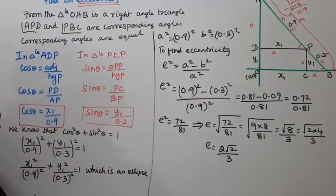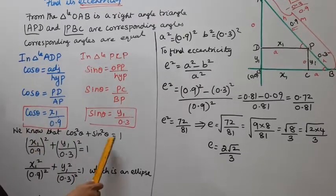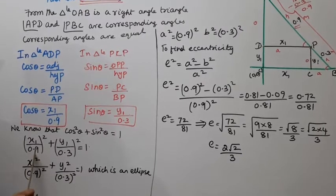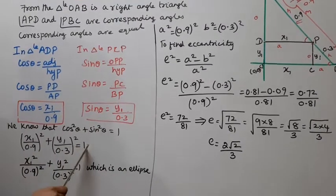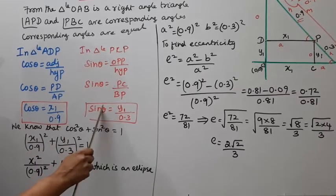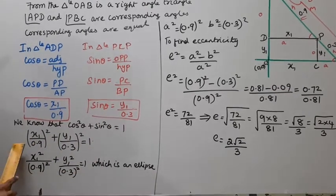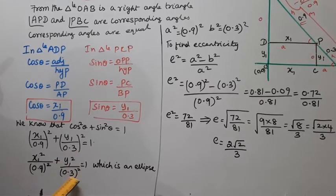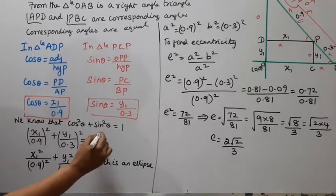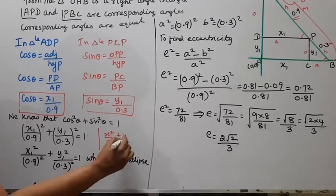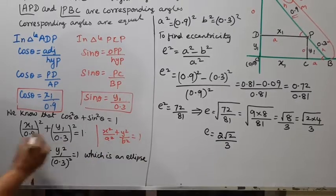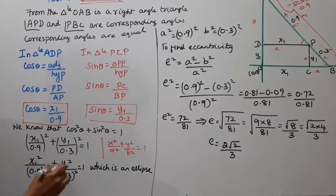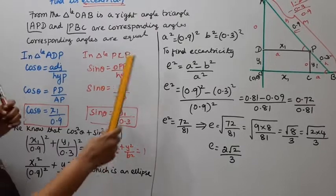We know that sin square theta plus cos square theta equals 1. So x1 square by 0.9 whole square plus y1 square by 0.3 whole square equals 1. This is the equation of ellipse: x square by a square plus y square by b square equals 1. Here a square is 0.9 whole square, b square is 0.3 whole square.